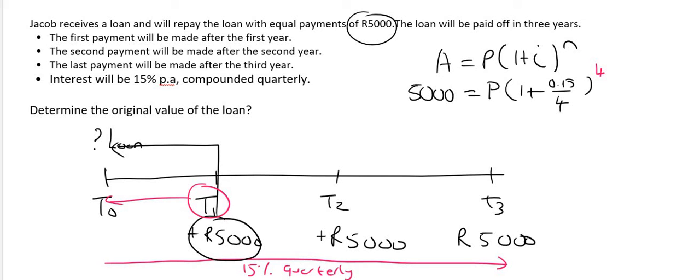Now, if you wanted to get P by itself, you would end up doing this: 5,000 over 1 plus 0.15 over 4 to the power of 4. Now, what most teachers do is they bring this bracket over here. They take it to the top.